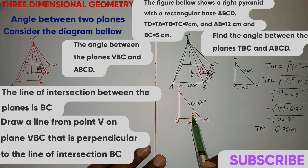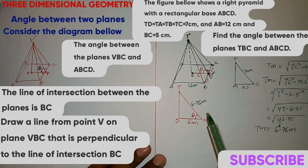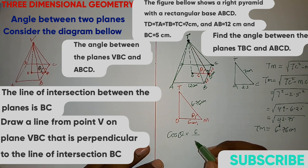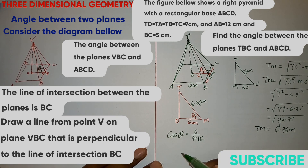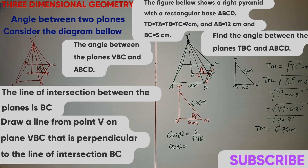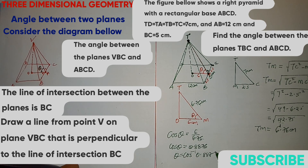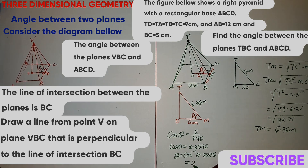So to get this angle theta, we have the adjacent and the hypotenuse. So we have to use the trigonometric ratio of cosine. Cos theta will be equal to adjacent, which is 6, all over 6.76. So cos theta equals 6 divided by 6.76, which gives 0.8876. So to get theta now, we say cos inverse of 0.8876, which will be equal to 23.41 degrees. And that will be the angle between the two planes.